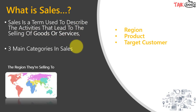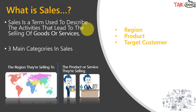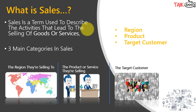Sales is a term used to describe the activities that lead to the selling of goods or services. There are three main categories in sales. One is the region — where they are selling, whether in USA, India, or Australia. Second is the product or service — for example, mobile phones, laptop bags, laptops, stationery items, or consulting and teaching services. Third is the target customer — if selling a mobile phone, target the young audience; if selling toys, target kids.